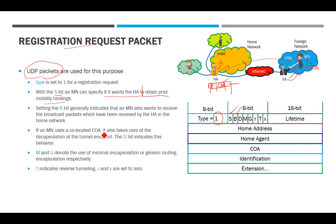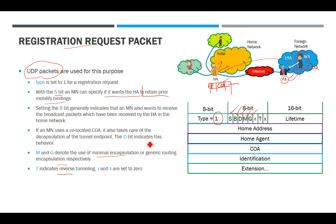If the mobile node uses a co-located COA, it also takes care of decapsulation at the tunnel endpoint. The M bit represents minimal encapsulation, G represents generic routing encapsulation, and T indicates reverse tunneling — these will be discussed further in the tunneling and encapsulation lecture. The R and X fields are set to zero for a registration request message.